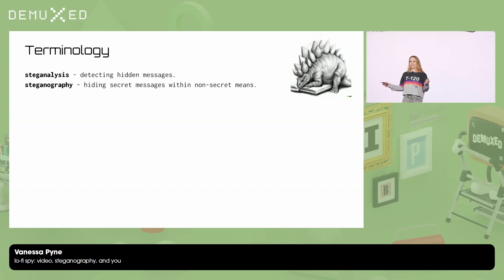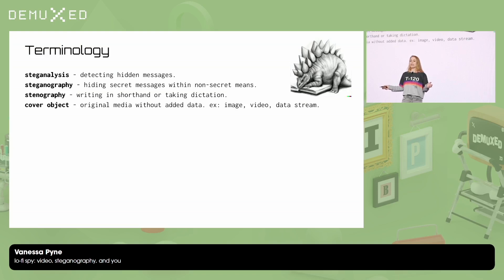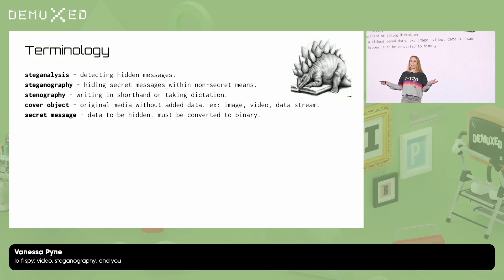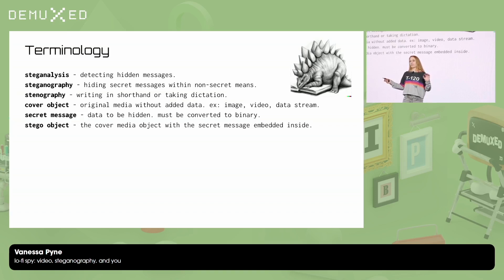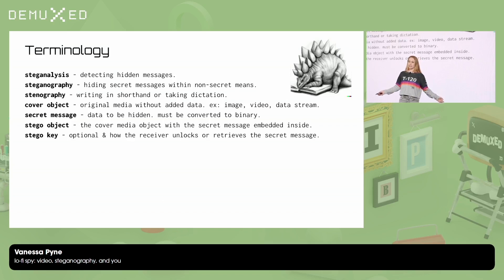Steganography is hiding secret messages within non-secret means. It's different from stenography, which is writing in shorthand or taking dictation. A cover object is the original media without added data — it could be an image, video, data stream, you name it. The secret message is the data to be hidden, and its binary form is implied. The stego object is the cover media with the secret message hidden inside of it. The stego key is optional — it's basically how the receiver unlocks or retrieves the secret message.